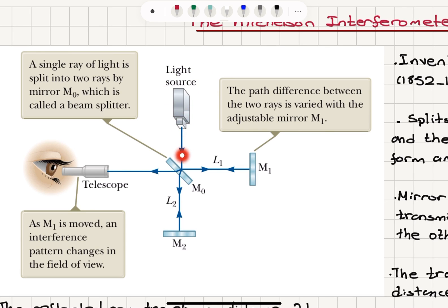Here is how it works. We have a light source. This light source produces a ray which is incident on mirror M0.